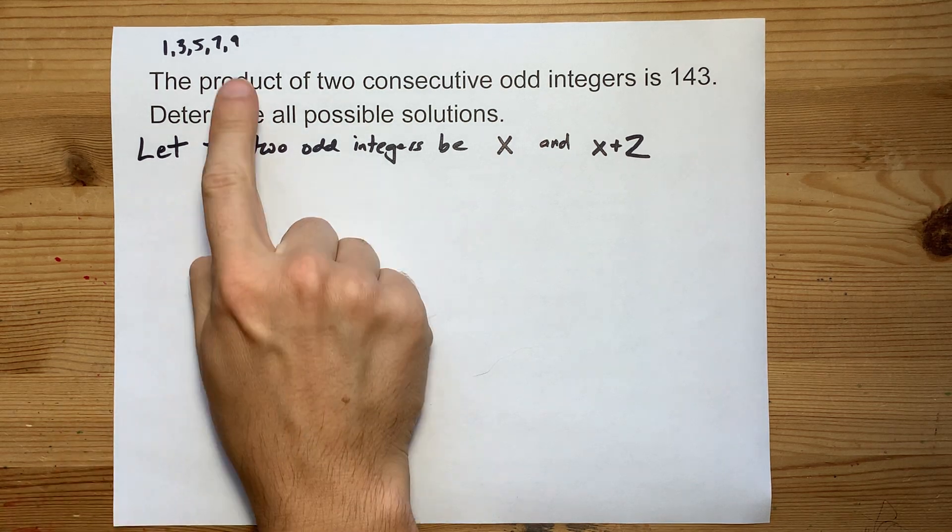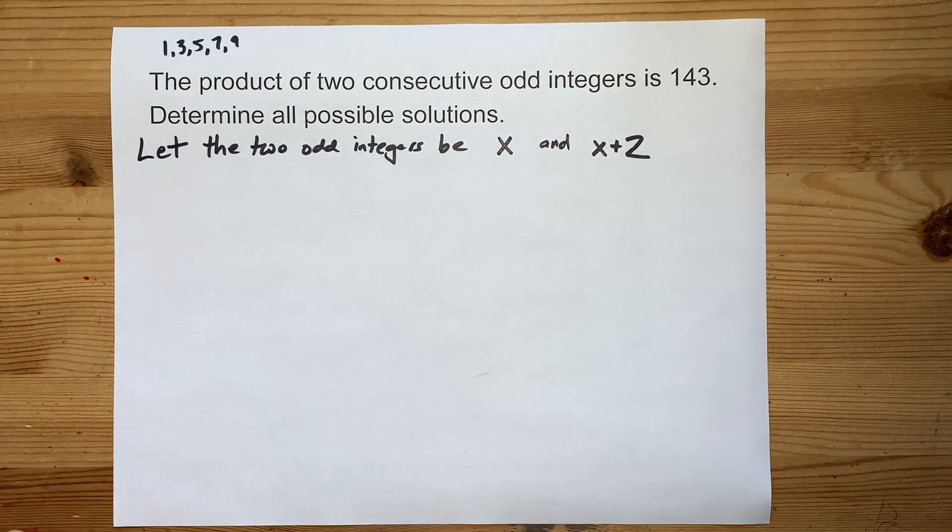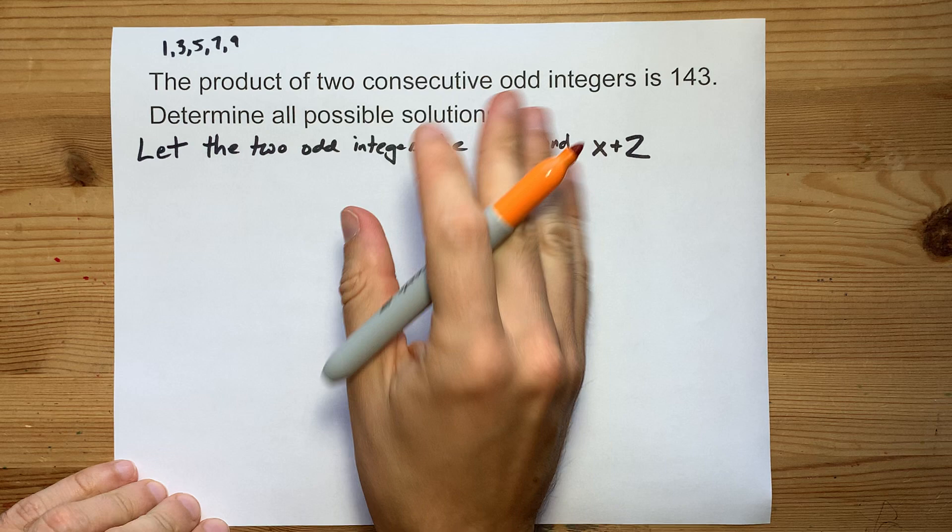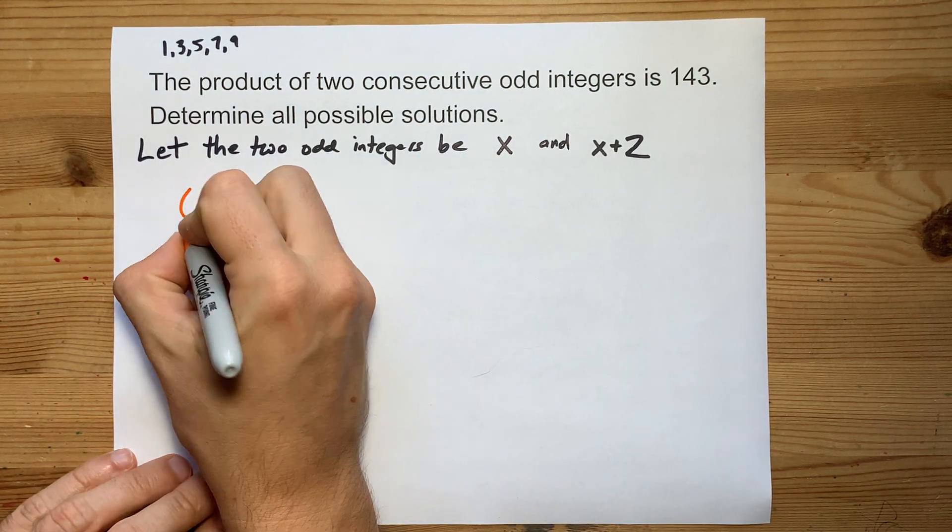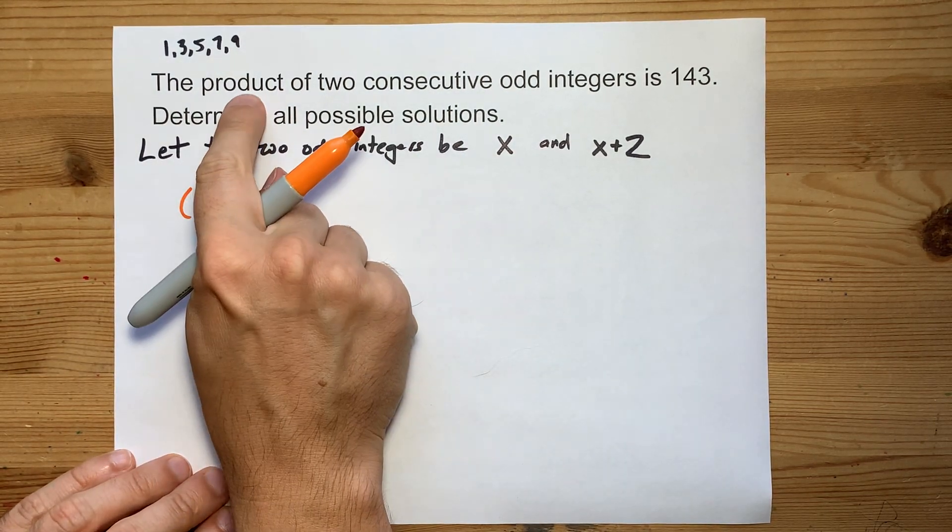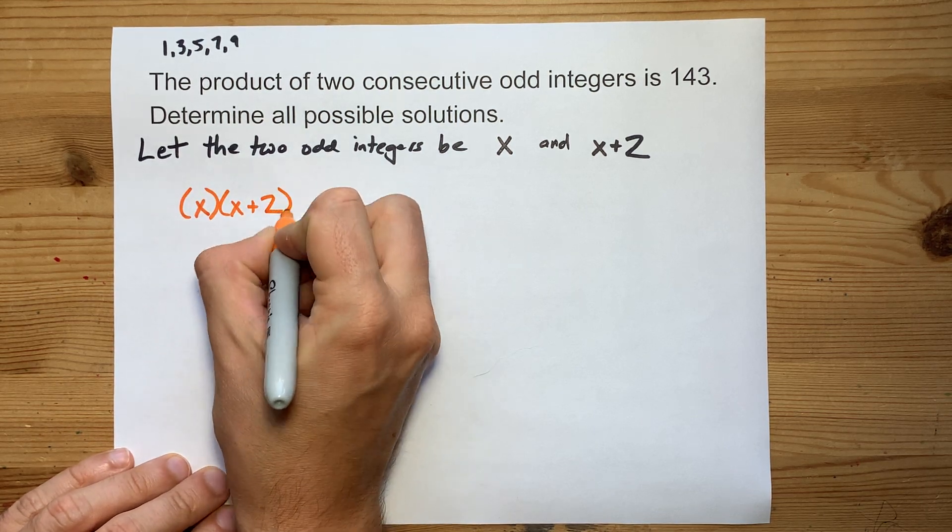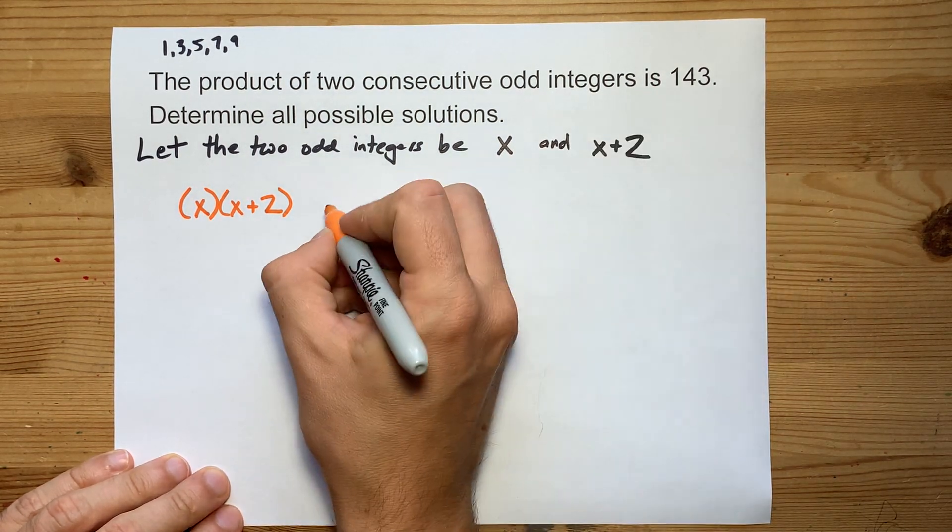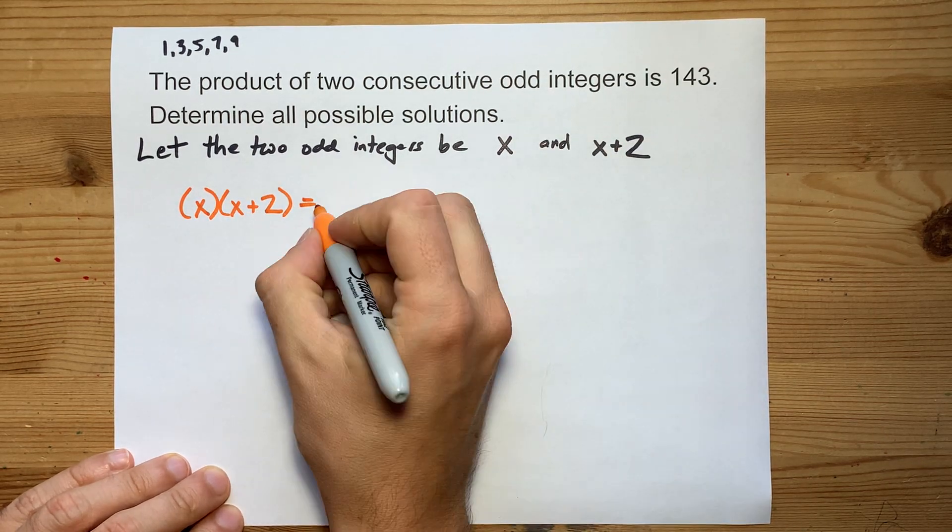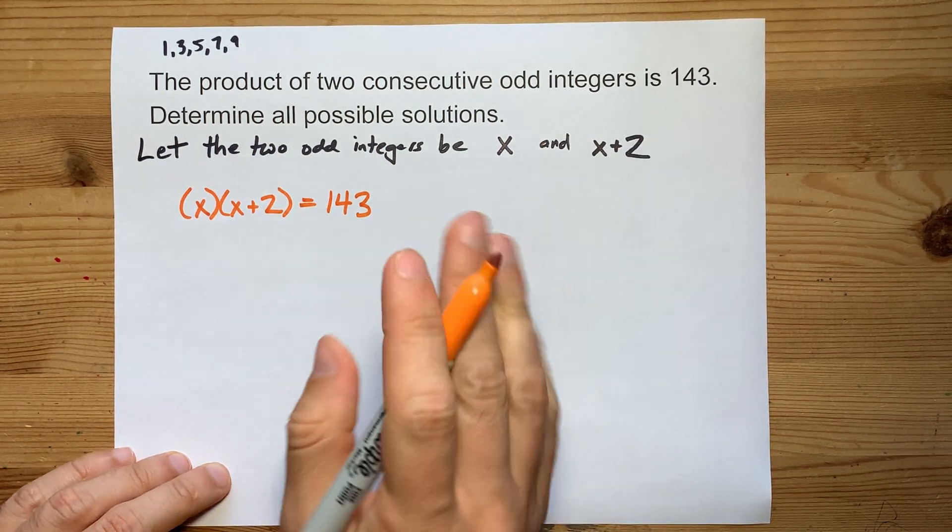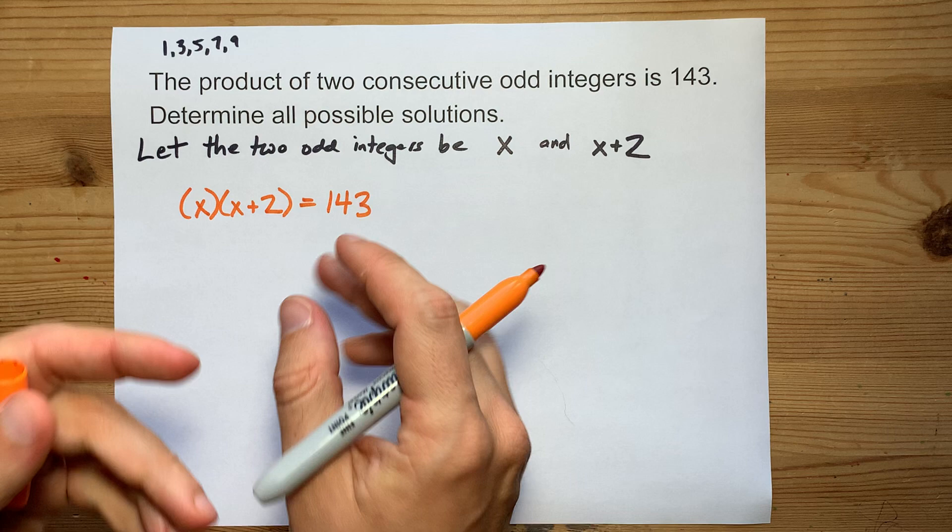Now, the product of them is 143. Here's the quadratic equation part. The first integer times the second integer is 143. Your job is to solve this equation.